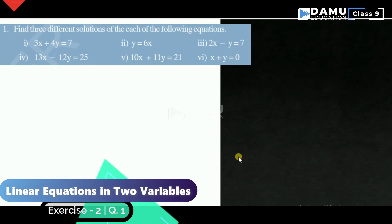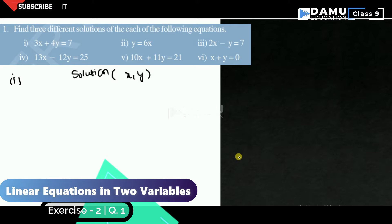We discuss our first question: find three different solutions of each of the following equations. Three different solutions means we are going to show them in the form of (x, y) coordinates. We will give values for x first, then find the corresponding y value.